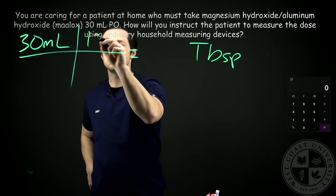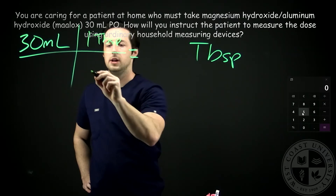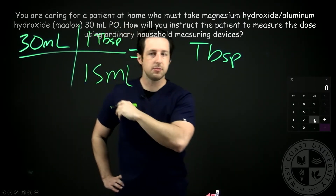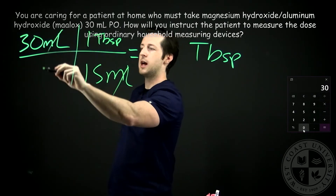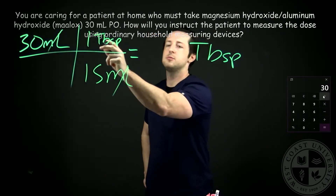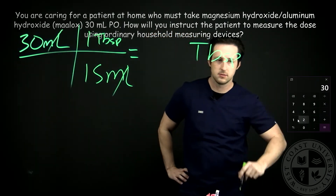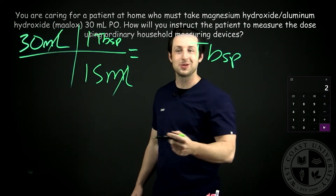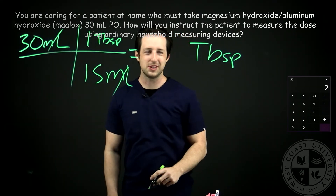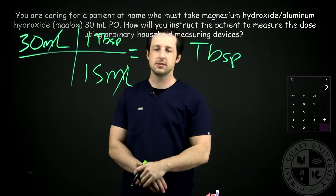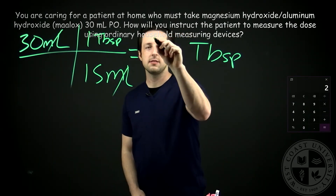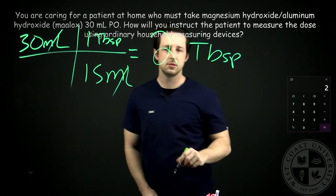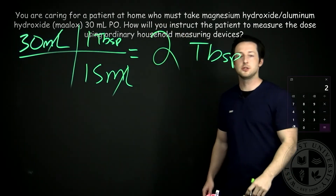So one tablespoon equals 15 mLs, and we do the same thing we did before. Our mLs cancel out, so we do 30 times 1 divided by 15. Or you can just do 30 divided by 15, and it gives us two tablespoons — that's your answer.